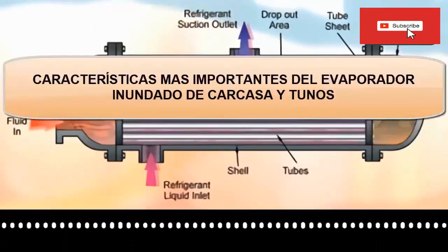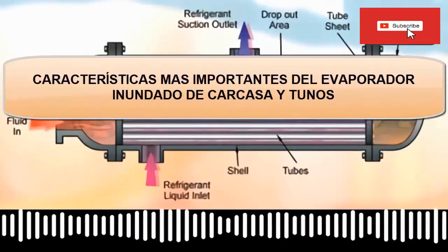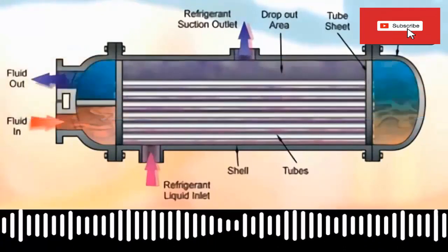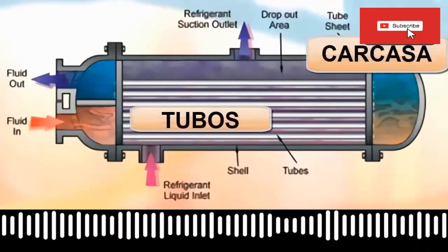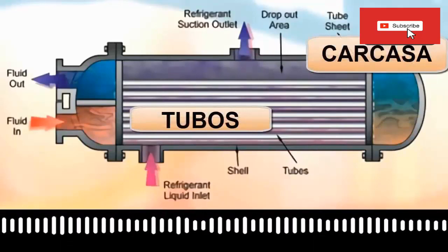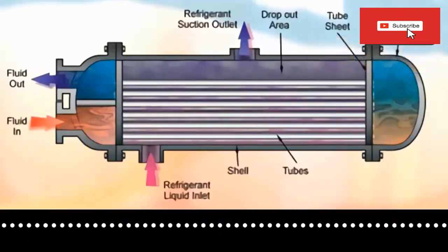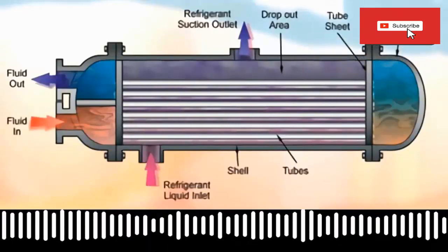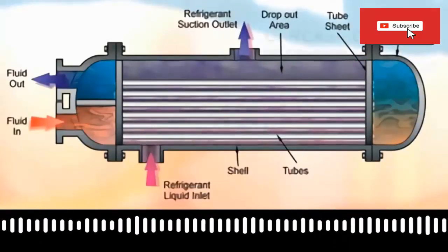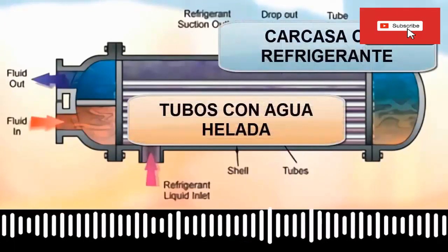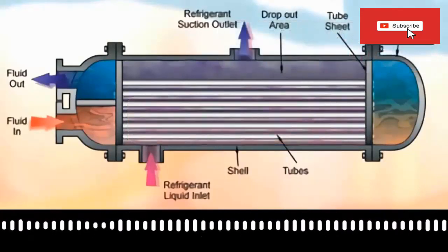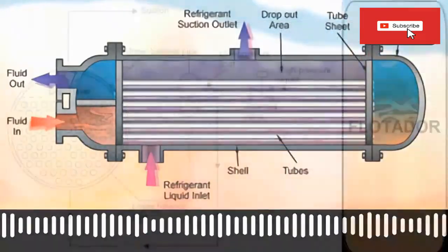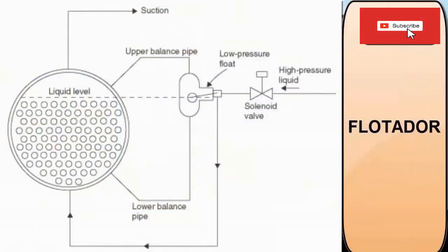The most outstanding characteristics of the shell and tube evaporator with flooded operation are the following. 1. A shell and tube evaporator consists of a shell and a large number of straight tubes parallel to each other. 2. With flooded operation, the refrigerant for the refrigeration circuit is in the casing, and the liquid to be cooled is in the pipes. 3. The liquid refrigerant from the refrigeration circuit is fed through a float valve that is responsible for maintaining a constant level of refrigerant inside the casing.